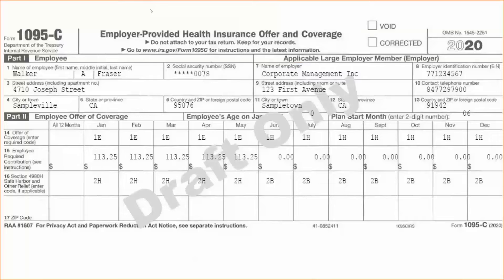This includes a field to report an employee's age, line 17 for the zip codes, and then a few new line 16 codes specifically for ICHRA — those stand for Individual Coverage Health Reimbursement Arrangement. I wouldn't call these common yet, but they're getting more popular and we do handle this functionality.